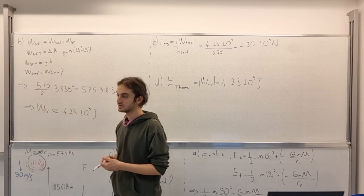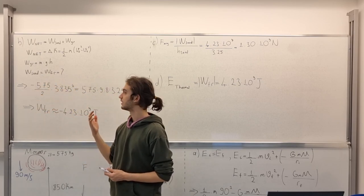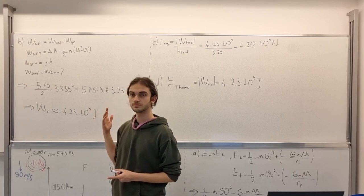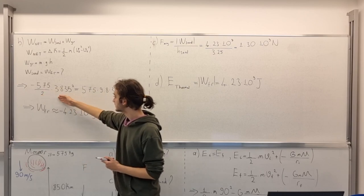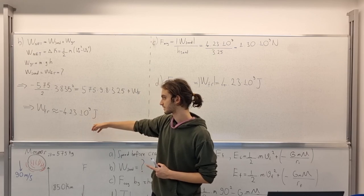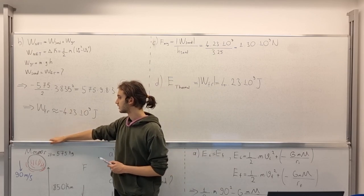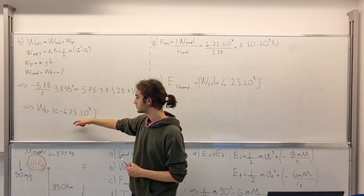Then we know that work by sand is equal to, also equal to the work done by friction force. Okay? Then we just simply write it and then acquire this solution. That says work done by friction is almost equal to minus 4.23 times 10 to the power of 9 J.